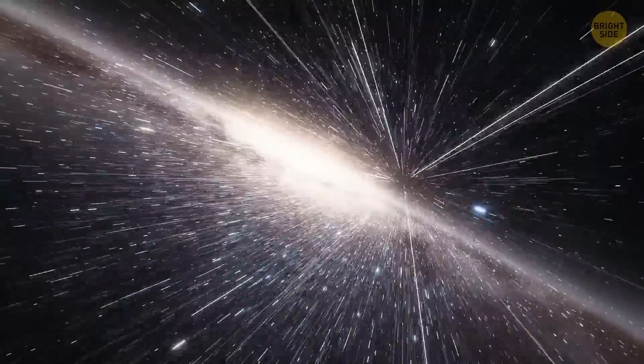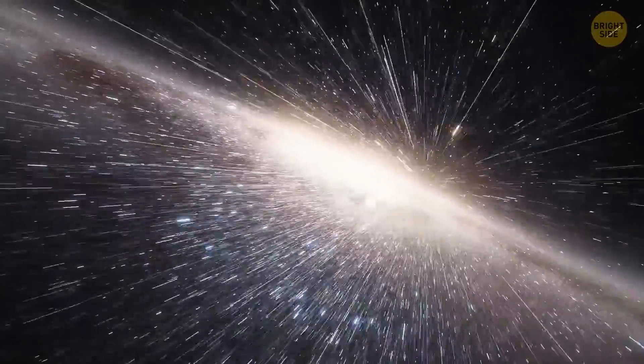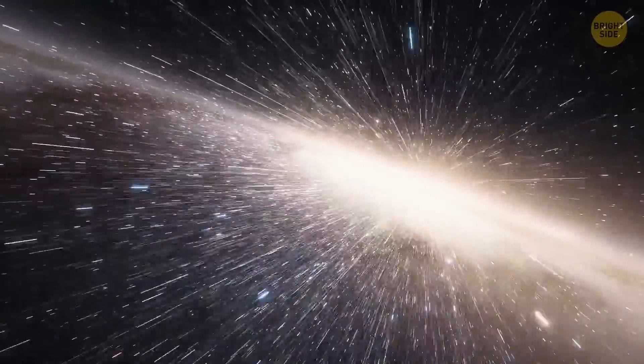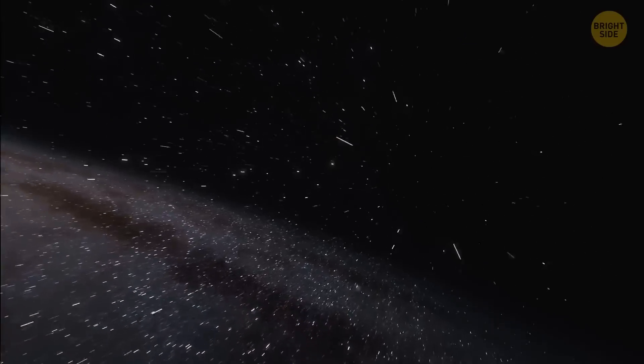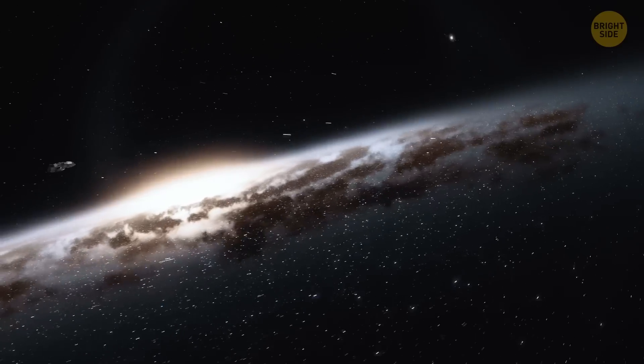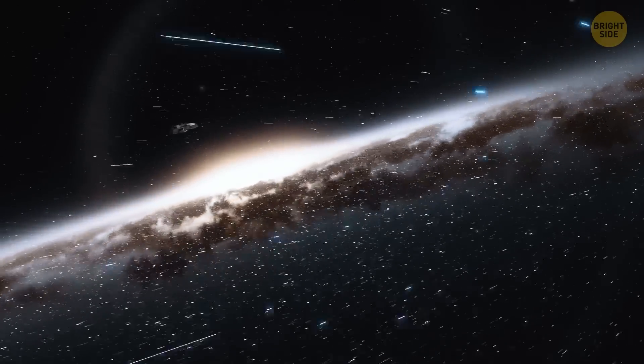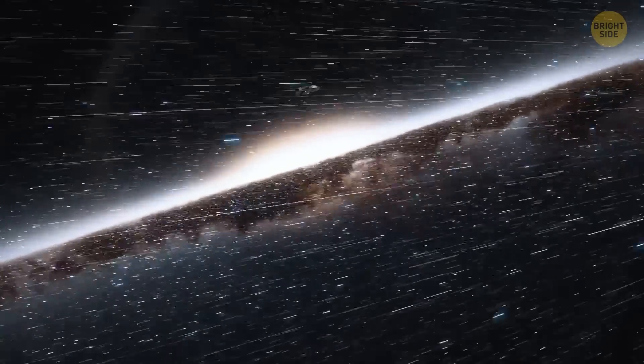The Milky Way is estimated to contain over 100 billion stars and is about 100,000 light-years across. In other words, if you were traveling at the speed of light, it would take you 100,000 years to cross the Milky Way from one end to the other. It's a couple trillion miles.